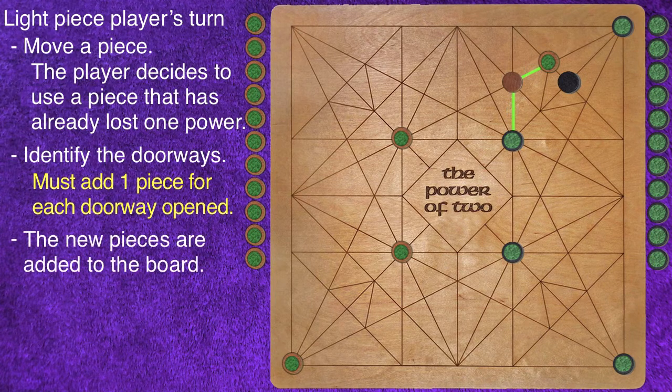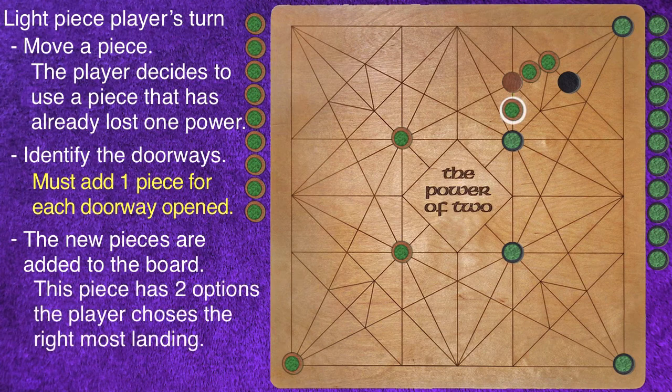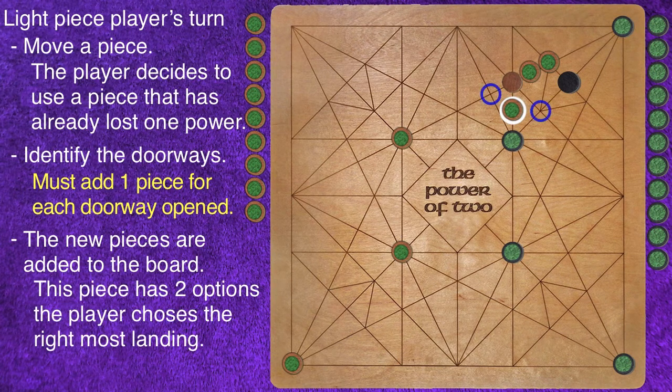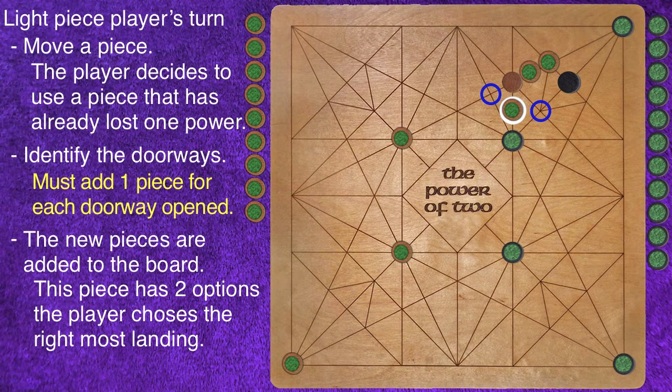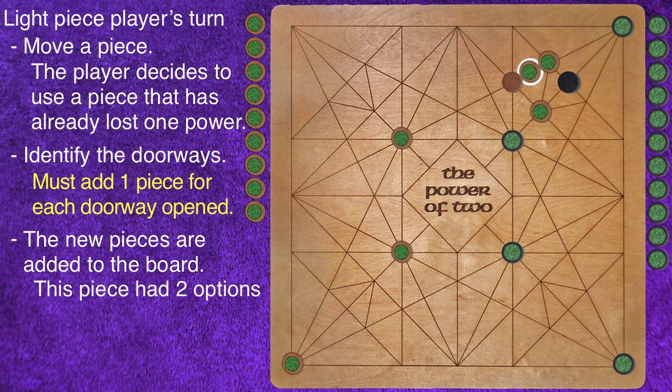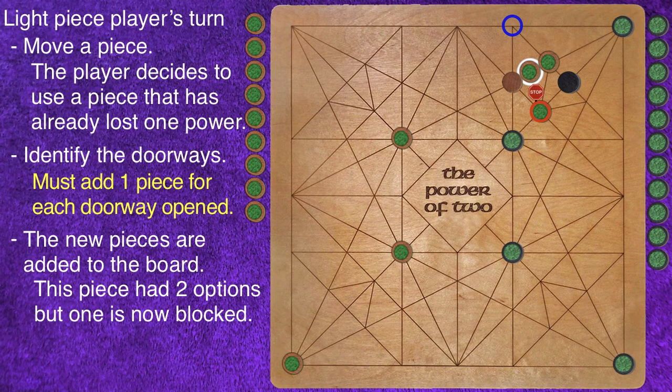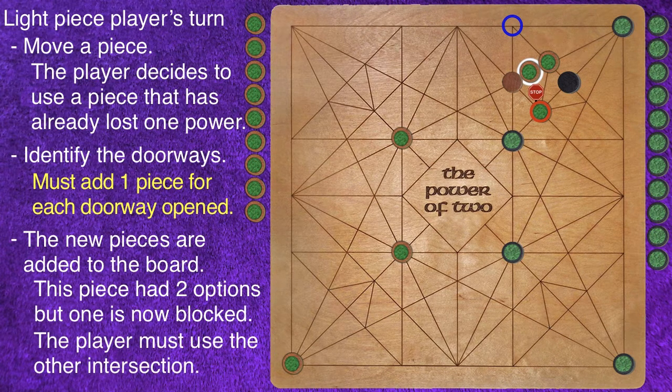This new piece has two intersection options, but the player chose the intersection on the right. This new piece had two intersection options, but one of the locations is now blocked, so the player must use the other intersection.